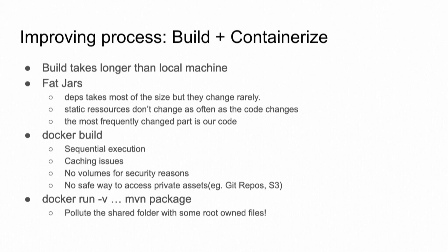There are also issues with the Docker builder: we cannot execute commands in parallel even if they are completely unrelated. There are caching issues — if we change one layer, everything after that layer needs to be rebuilt and executed. Historically, there are no volumes with the Docker build command, for security reasons. And finally, there is no safe way to access private resources. One hack is to mount the local repository into the container using Docker run, but this pollutes our local workspace with unnecessary root files.